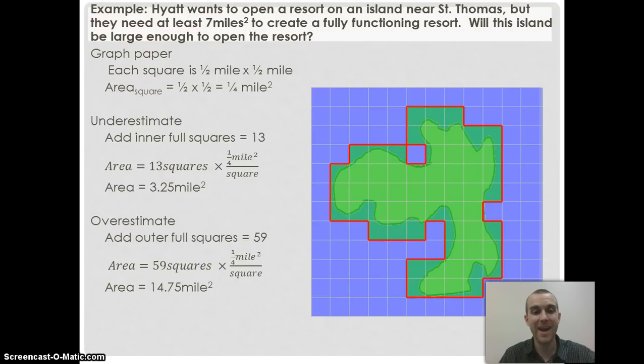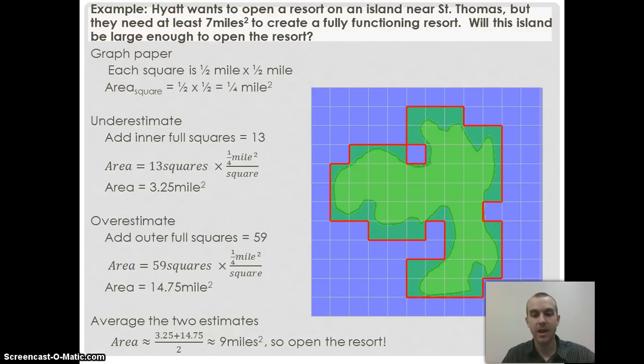Now I need to average my two values. I'll add them together and get 18 square miles. Divide that by 2, which gives me 9 square miles—approximately what this shape covers. That tells the resort it's good to go and open.